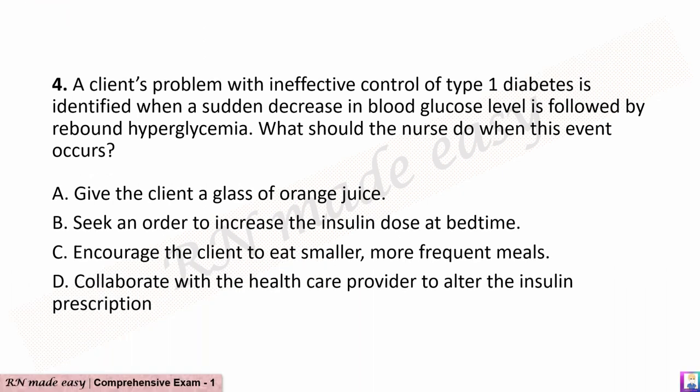Question 4. A client's problem with ineffective control of type 1 diabetes is identified when a sudden decrease in blood glucose level is followed by rebound hyperglycemia. What should the nurse do when this event occurs? A. Give the client a glass of orange juice. B. Seek an order to increase the insulin dose at bedtime. C. Encourage the client to eat smaller, more frequent meals. D. Collaborate with the healthcare provider to alter the insulin prescription.